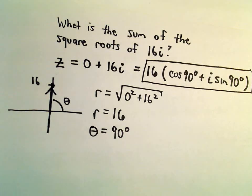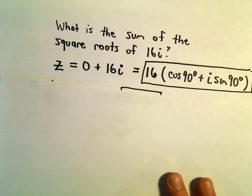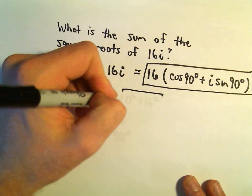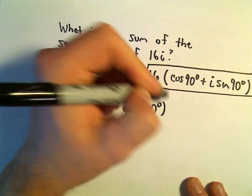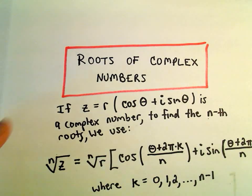Now we'll have to use the formula that we had on the very first page. So let me write this down, so 16 cosine of 90 degrees plus i sine of 90 degrees. Alright, so now to find the square roots, we'll just go back to our formula.